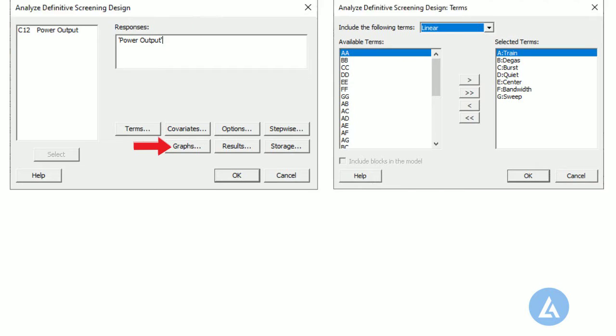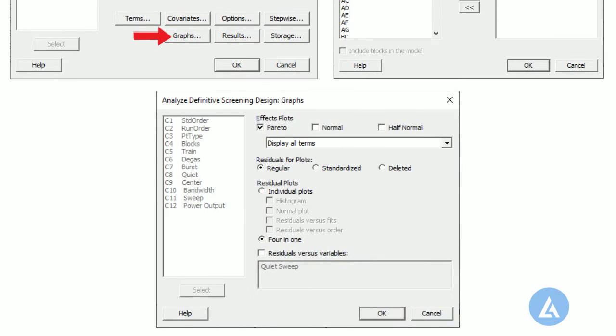Click Graphs. Select an option to display all terms. Under residual plots, select four in one. Click OK in each dialog box to get the results for analyzing screening design.